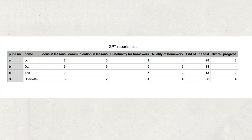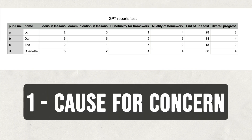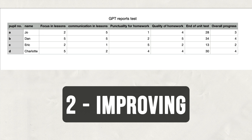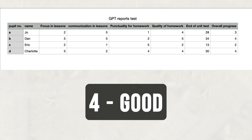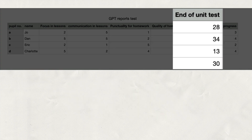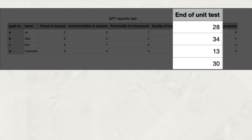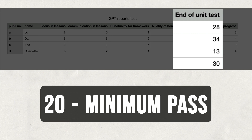With the exception of the end of unit test, each of the other columns has been allocated a number between one and five. One represents poor performance or cause for concern. Two is poor but improving. Three is acceptable, it meets the standard. Four is good and five is excellent. Column G for the end of unit test has been marked out of 40. I'm going to tell the large language model that if the student scored 15 or below, they'll be expected to resit the test. 20 is the minimum pass grade, and any mark above 30 would be considered impressive at this stage in the school year.